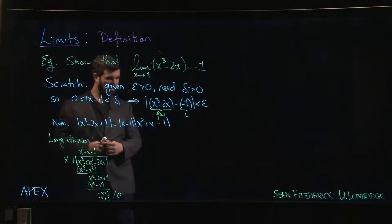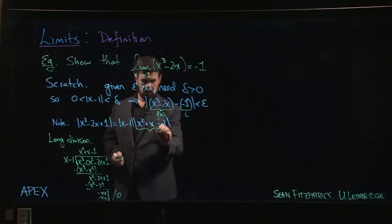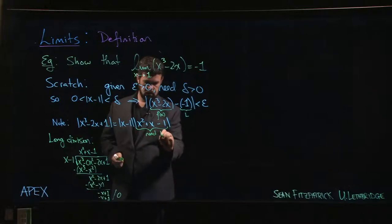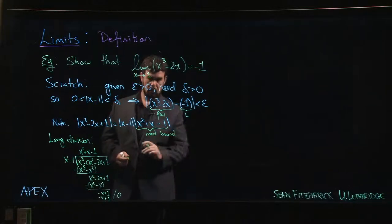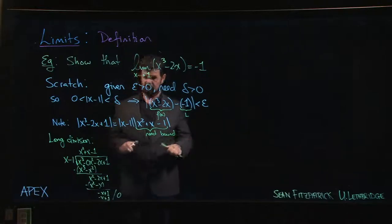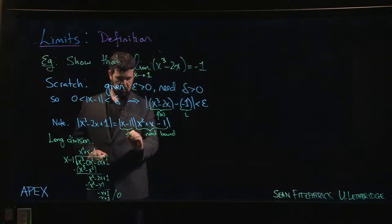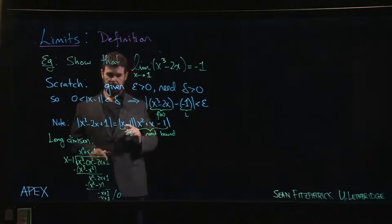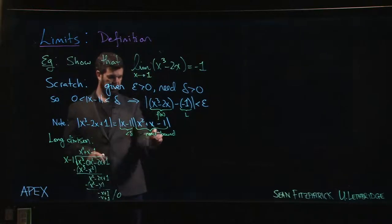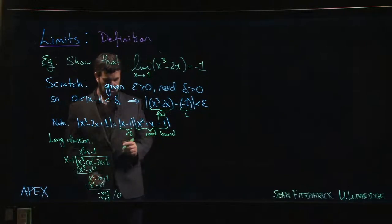The next thing is the same as the last problem: we need a bound on this other factor. We need to make sure it doesn't get too big, because we know we can make the x minus one part less than delta. We just need to make sure the other factor doesn't get too big, and then we can make the whole product smaller than epsilon.